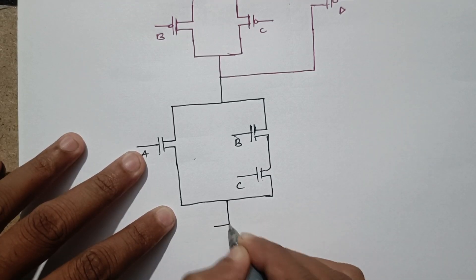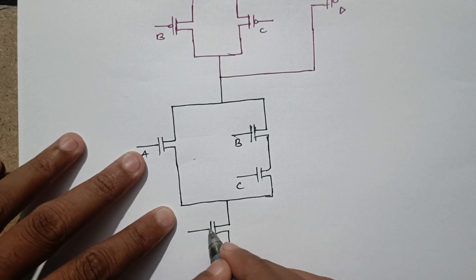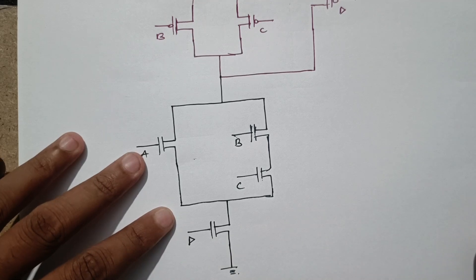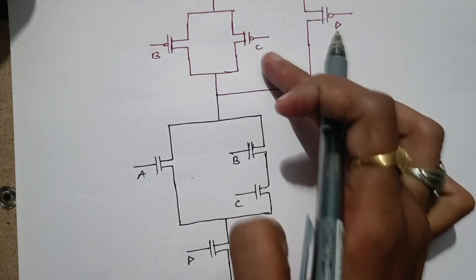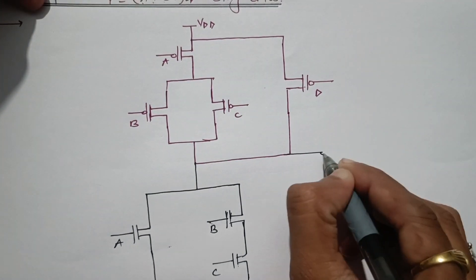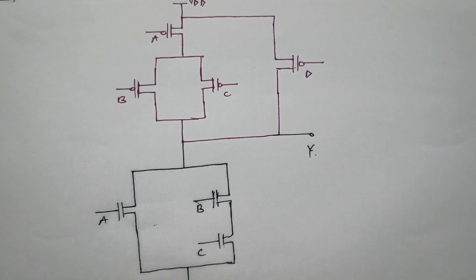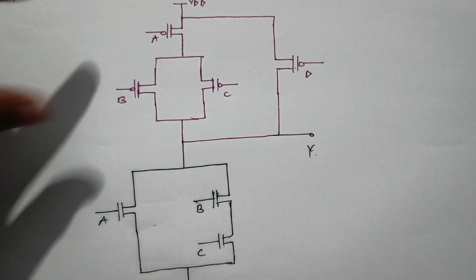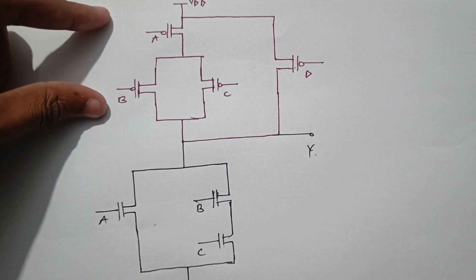We take from here — this is D — and now this is grounded. The output will be at the center between PMOS and NMOS, connected at Y, that is the output. This is how we have implemented the given Boolean function using CMOS — first PMOS, then NMOS. I hope you understood this.